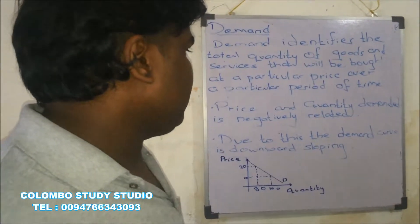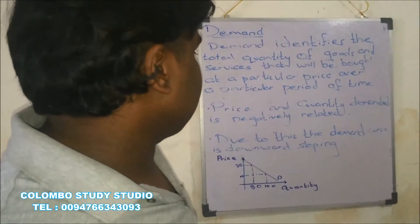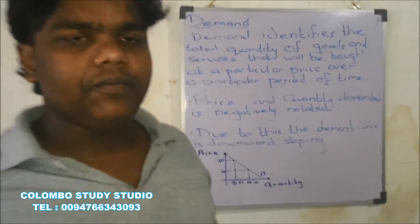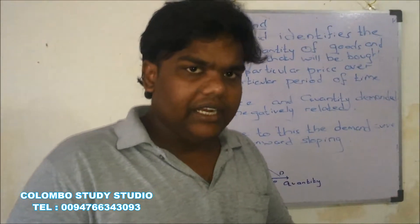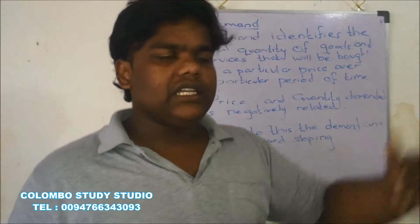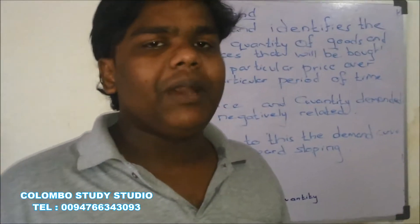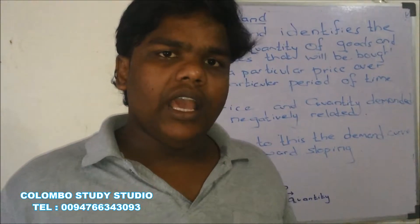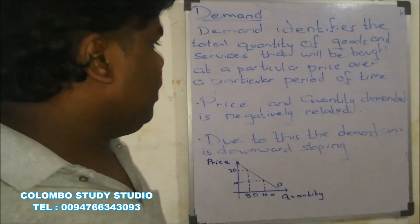Price and quantity demanded are negatively related. We can identify this based on practical examples — when price increases, we generally buy less quantity. Because of this, price and quantity demanded have a negative relationship.